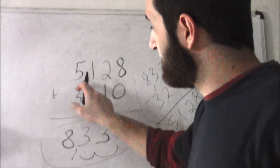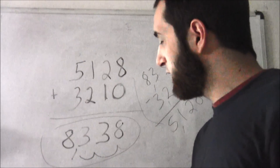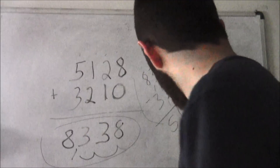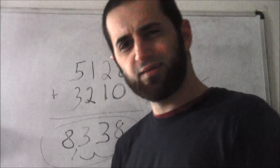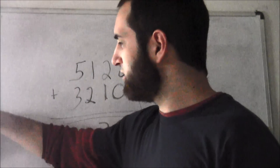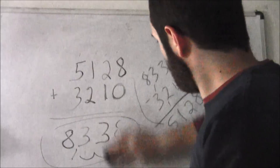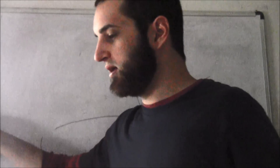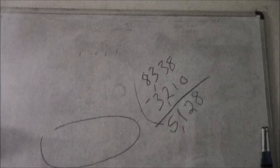Four digits plus four digits and we ended up with four digits. You can end up with more — if your answer would have gotten to ten thousand or whatever, there's five digits. All right, let's do another addition problem.